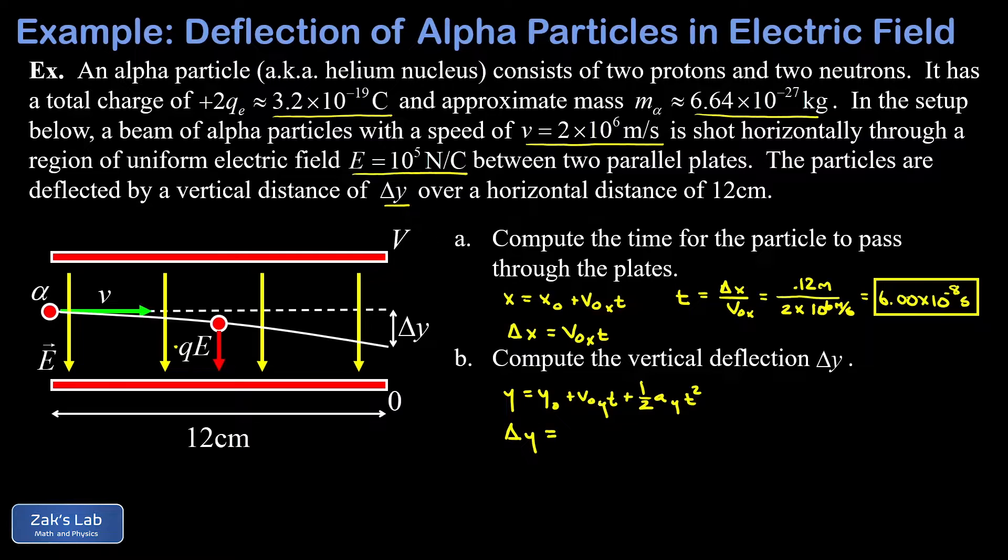There is no initial vertical Y velocity. That beam entered horizontally between these plates. So that term vanishes and I just get delta Y is one half times my Y acceleration times the time for the process squared.